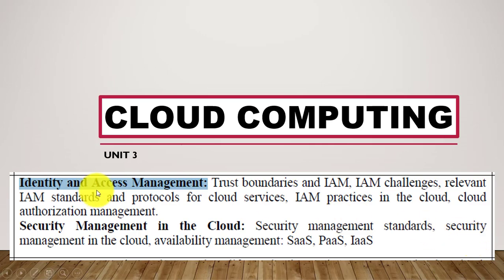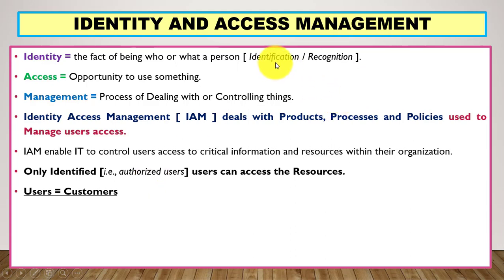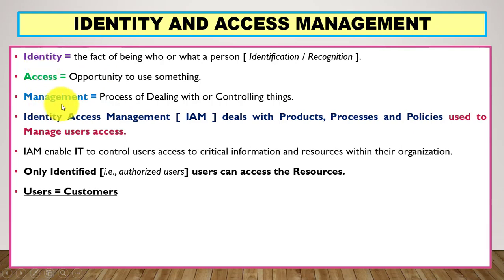In Unit 3 we have Identity and Access Management. We will learn how we can manage user identity on the cloud and how we can manage user access to different services on the cloud. For this we will use different IAM tools — that is, Identity Access Management tools. Identity means identification of the person, access means opportunity to use something, and here we have access to different cloud services provided to users.